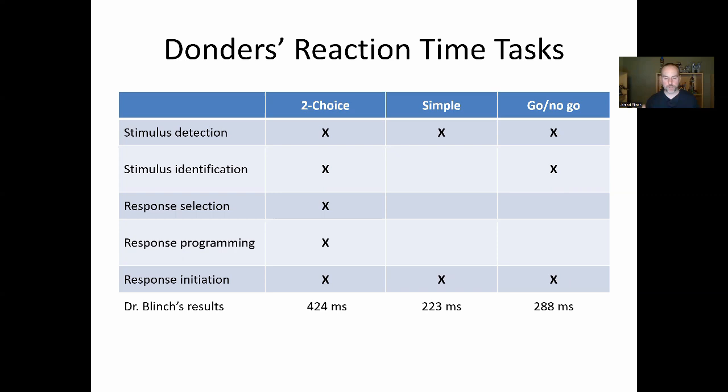Here are some example numbers from when I ran this experiment with my graduate class. Reaction time for two-choice is the longest, simple is the shortest — about a 200-millisecond difference — which you can really feel and see. The difference between simple and go/no-go is about 50 milliseconds, which is harder to perceive.